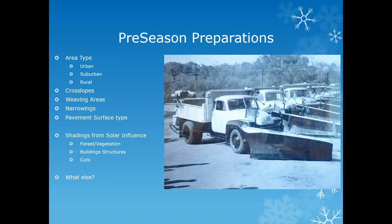Solar influences affect road conditions — wooded areas or buildings that shade the roadway increase the risk of frost and black ice. Cuts, where the road runs below surrounding ground level, are at higher risk for blowing snow, black ice, and drifting in. Be aware of where those areas are and treat them accordingly.